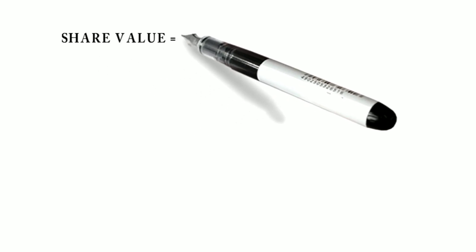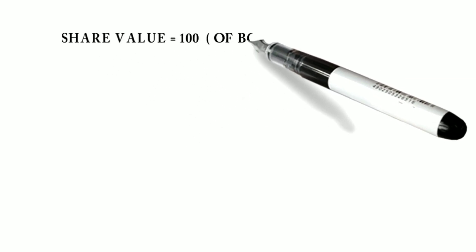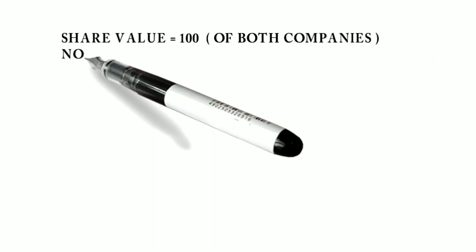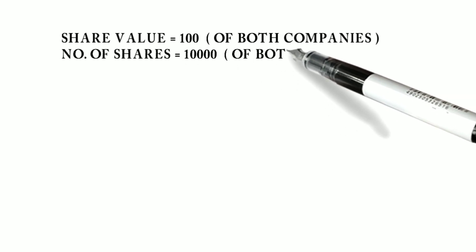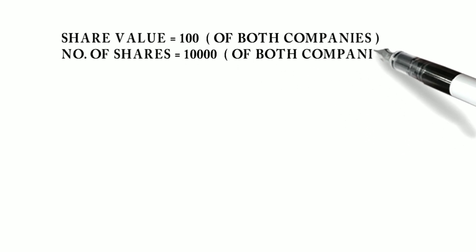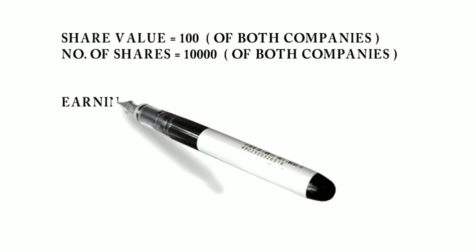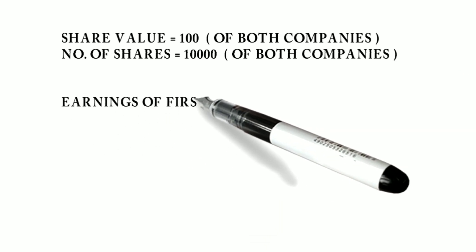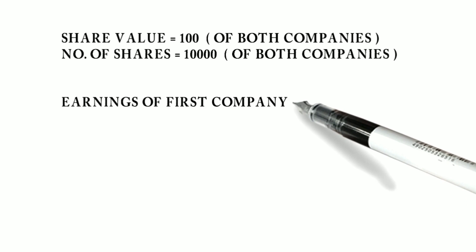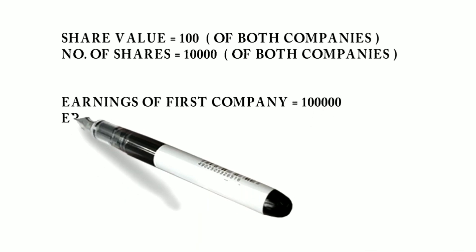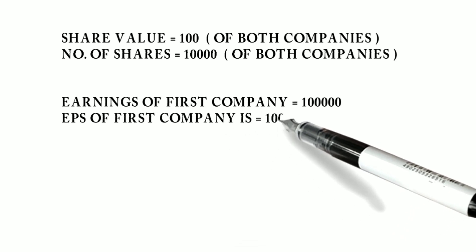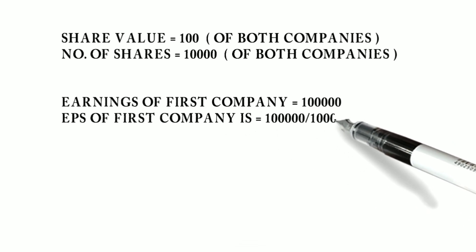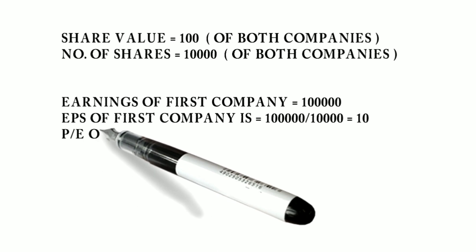In order to calculate the answer, let's take a look at the two business examples. Let's start with the share value of two companies. The total shares are 10,000. In the EPS calculation, the earnings per share is 1 lakh divided by the total number of shares, which is 10,000. That equals an EPS of 10.